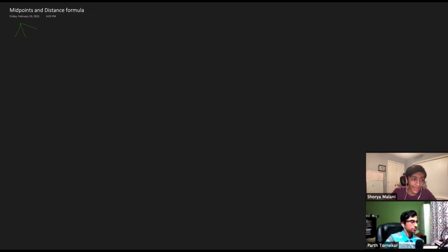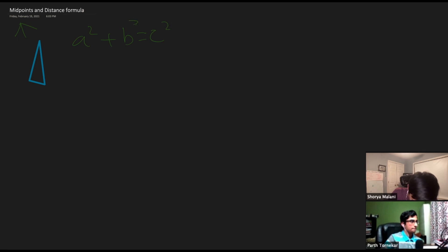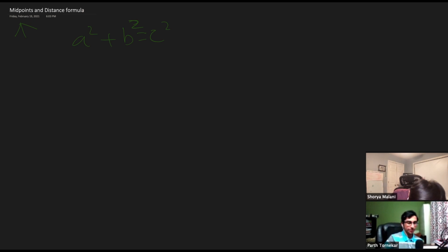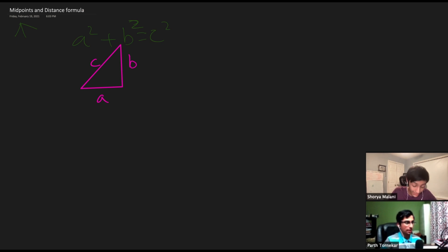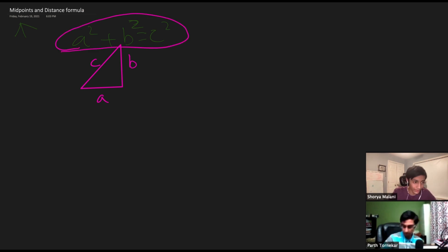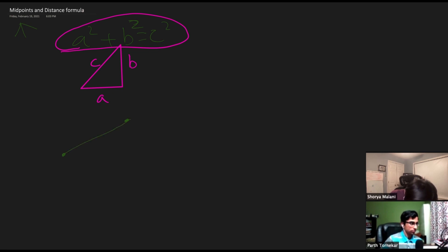We're actually starting with the Pythagorean theorem: a squared plus b squared equals c squared. This shows that if you have a triangle with side lengths a, b, and c, that relationship is true. Why does this matter for distance? Let's draw distance differently — here's a starting point, here's an ending point, with a line going between them, and we can make a little right triangle out of it.